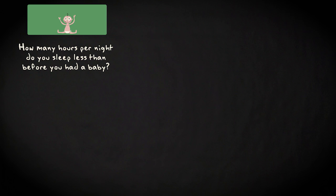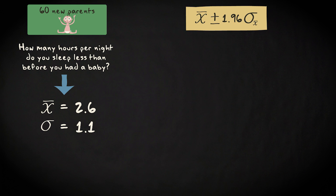Let's go back to our example. The sample mean of lost sleeping hours is 2.6. The population standard deviation is 1.1. And the sample size is 60. We now have all the necessary ingredients to compute our confidence interval. This is the formula, x-bar plus and minus 1.96 times sigma x-bar. We know that sigma x-bar equals sigma divided by the square root of n.